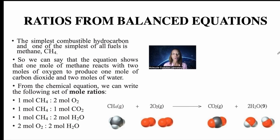Methane is the simplest combustible hydrocarbon. One mole of methane reacts with two moles of oxygen to produce one mole of carbon dioxide and two moles of water. From the chemical equation, we can write the following mole ratios: 1 CH4 to 2 O2; 1 CH4 to 1 CO2; 1 CH4 to 2 H2O; 2 O2 to 2 H2O; and 2 O2 to 2 CO2.